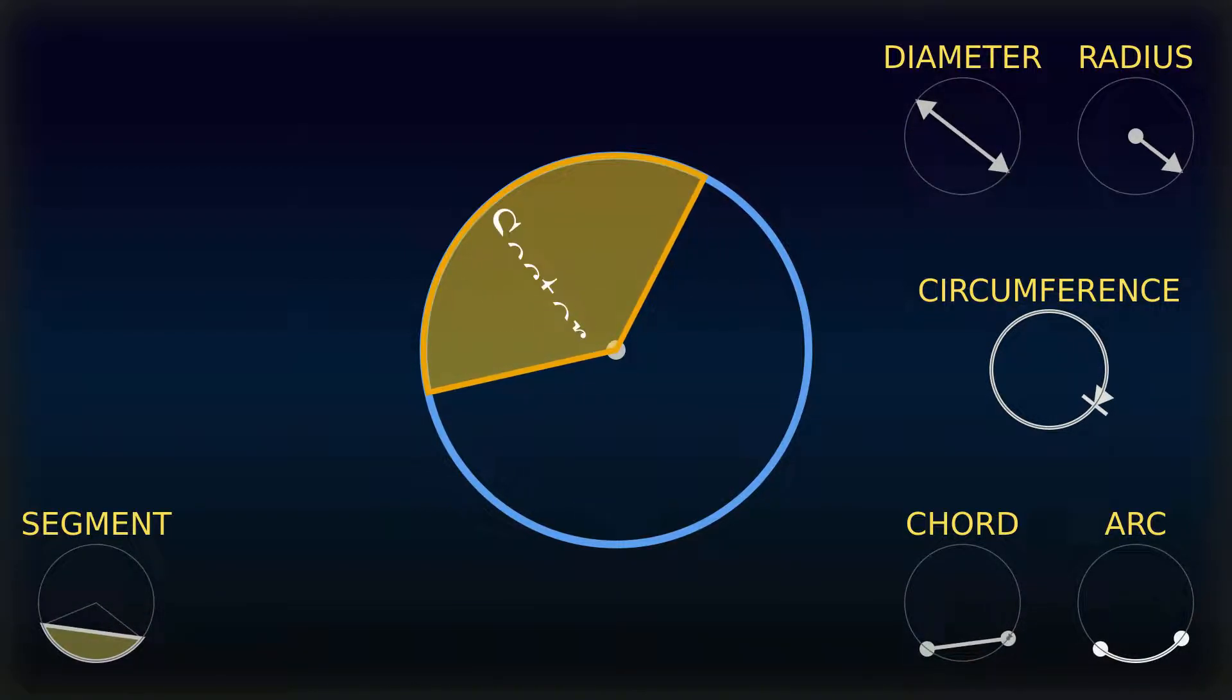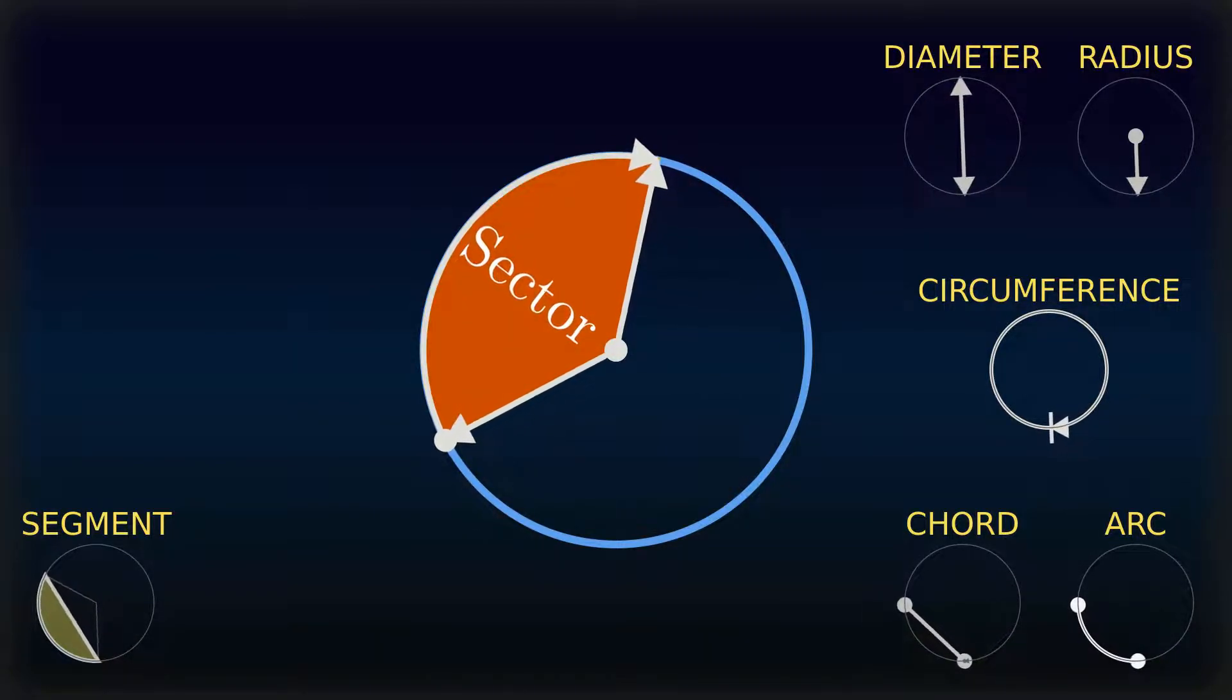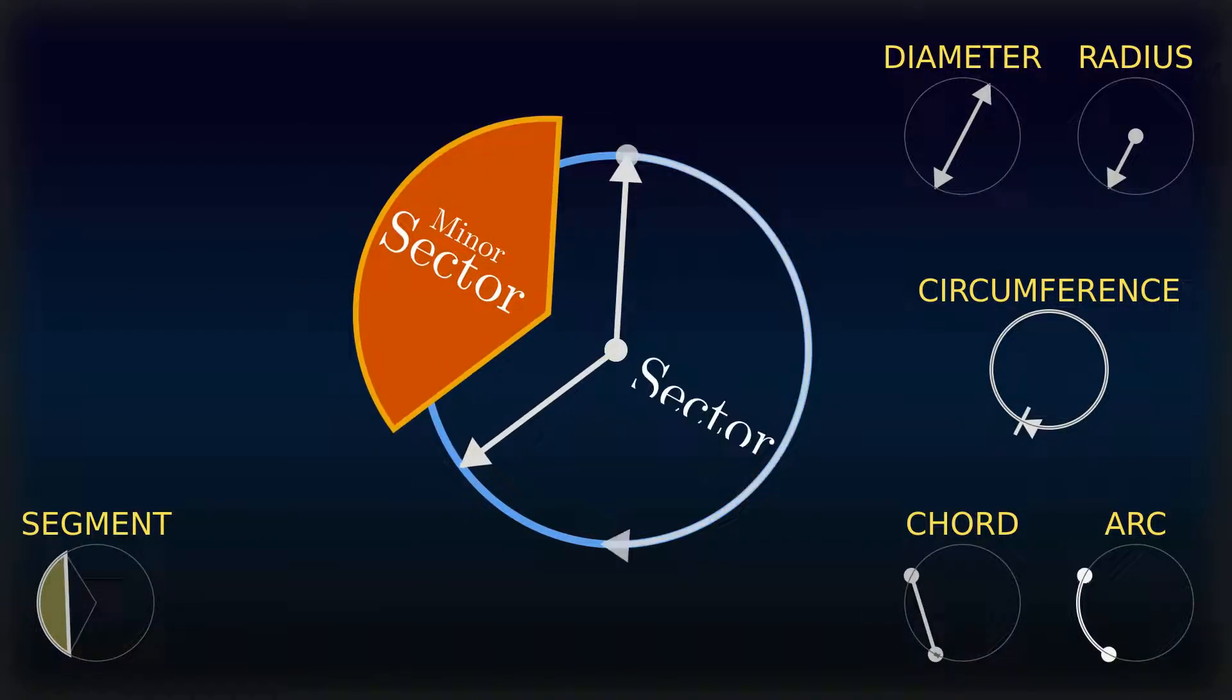A sector is a region bounded by two radii and an arc, where the smaller area is known as the minor sector and the larger being the major sector.